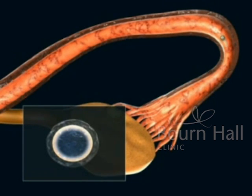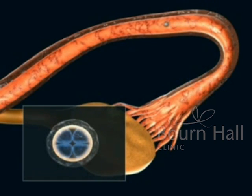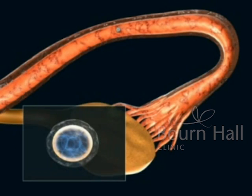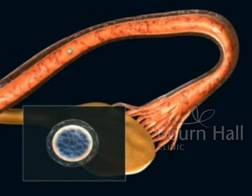One day following fertilization, a cell with two nuclei is observed, at which point it is called an embryo, and it begins to divide itself. Two days after fertilization, the embryo is made up of two to four cells and moves along the tube in the direction of the uterus.